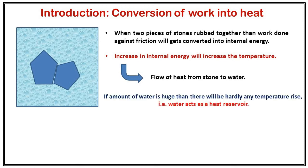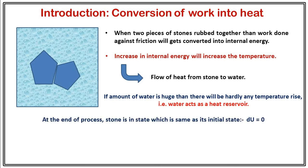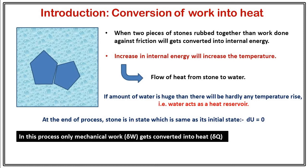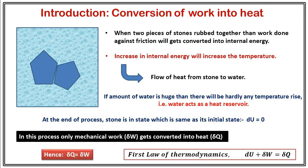Now suppose a large amount of water is used — there will be hardly any temperature change. That is, water acts as a heat reservoir in this case. As there is no change in the state of the system at the end of this process, the stone is in the same state as its initial state. Therefore in this whole process, change in internal energy is equal to zero. So from the first law of thermodynamics, du plus delta W equals delta Q, and if du equals zero, therefore delta Q equals delta W. That is, in this process mechanical work gets converted into heat.